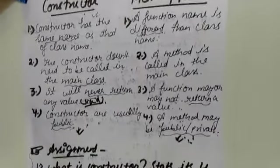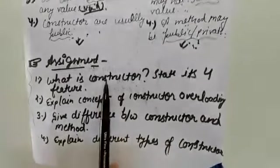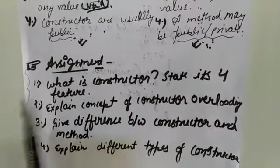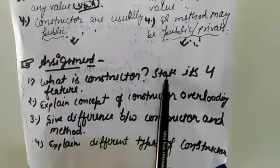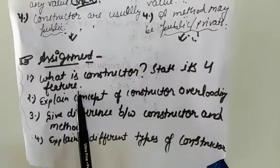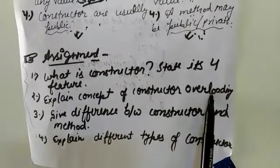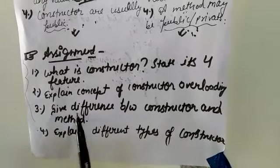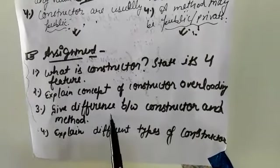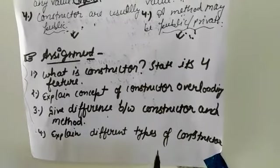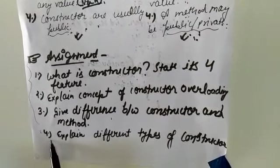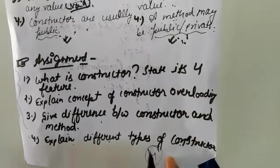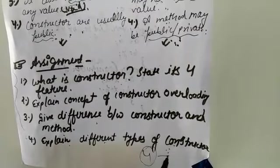Here is the assignment for class. You have to do this in your copy — you can continue in your Class 9 copy. There are four basic questions: First, what is a constructor? State its four features. Second, explain the concept of constructor overloading with examples. Third, give the difference between constructor and method — draw a line between them on the page. Fourth, explain the different types of constructors — all four types with definitions and examples.